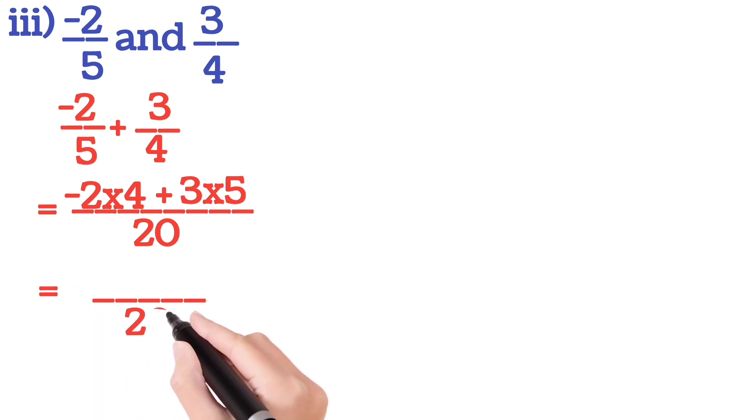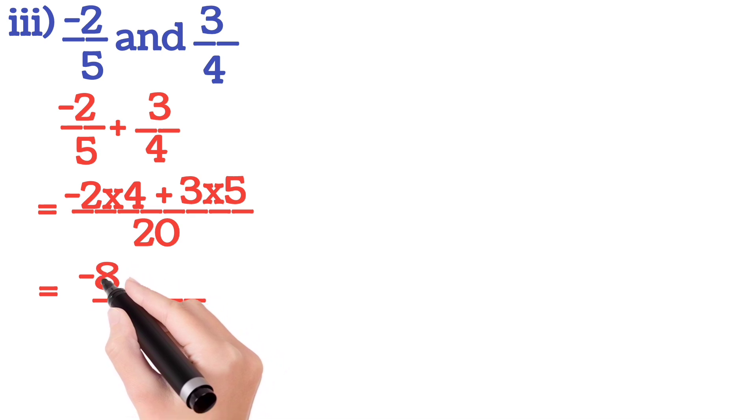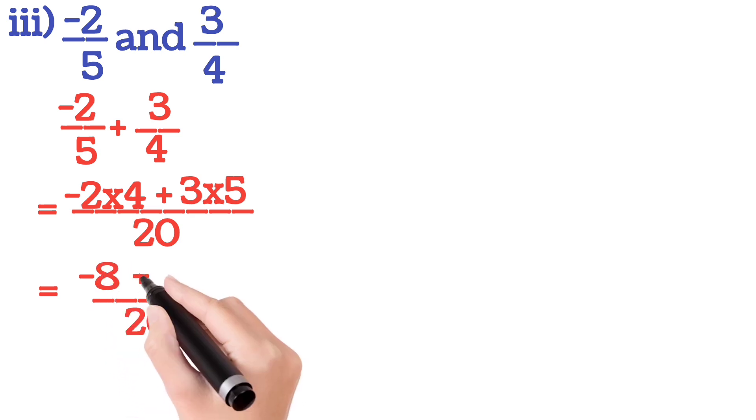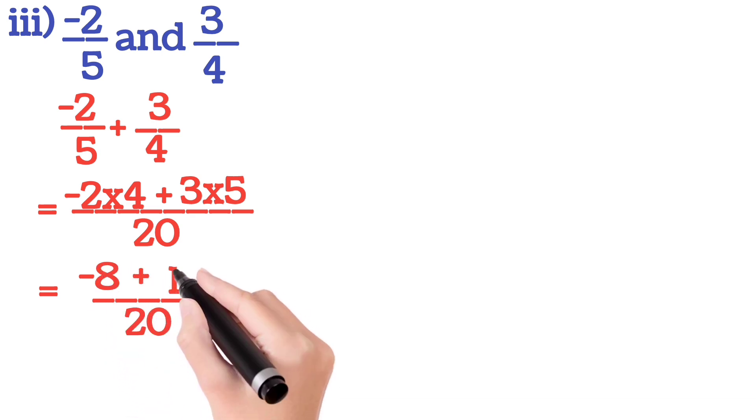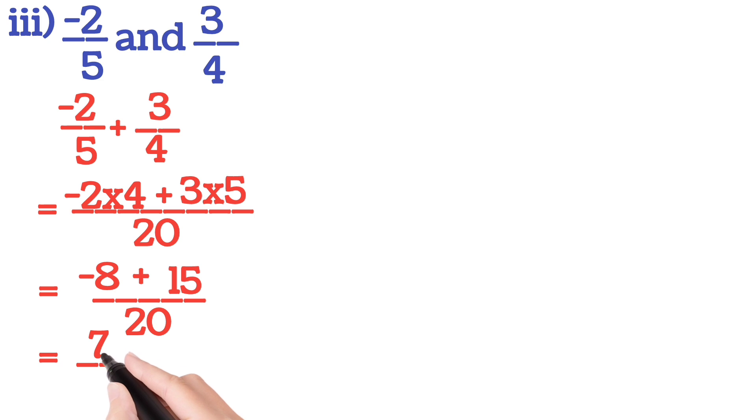First 20, then 4 into minus 2 is minus 8 plus 3, 5 is 15. One is negative, one is positive, so you will do subtraction and plus sign is with bigger number. So our answer is 7 by 20.